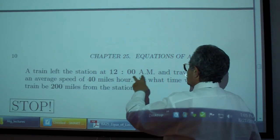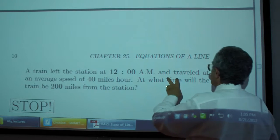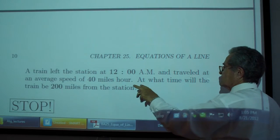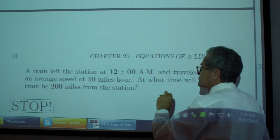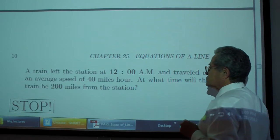A train left the station at 12:00 AM and traveled at an average speed of 40 miles per hour. At what time will the train be 200 miles from the station?